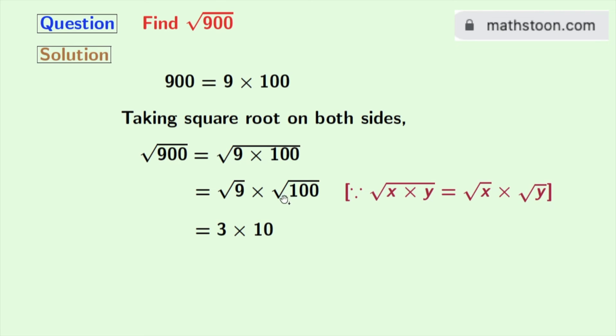Now this is equal to 3 times 10, as we all know that square root of 9 is 3 and square root of 100 is 10. After multiplying this, we get 30. And this is our final answer.